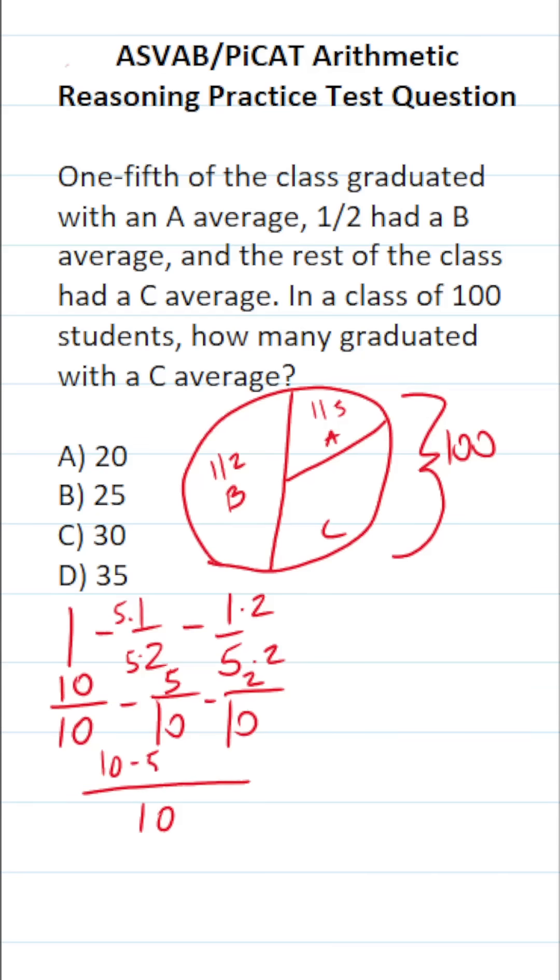10 minus 5 minus 2. That's the same thing as 10 minus 7 over 10. 10 minus 7 is 3. So in other words, three-tenths of this class graduated with a C average.